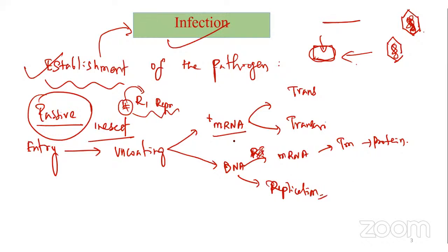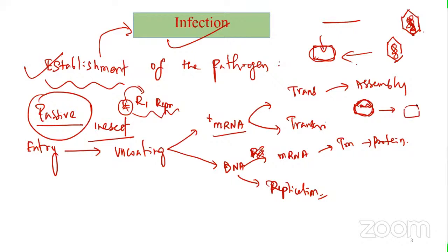Once replication occurs, the virus will directly assemble - whatever the respective genomes are produced, they will be coated with coat protein, then released. After the coat protein is added, the virus either enters another cell or is taken out to the vector body. Each case has a different mechanism, with its own strategy.